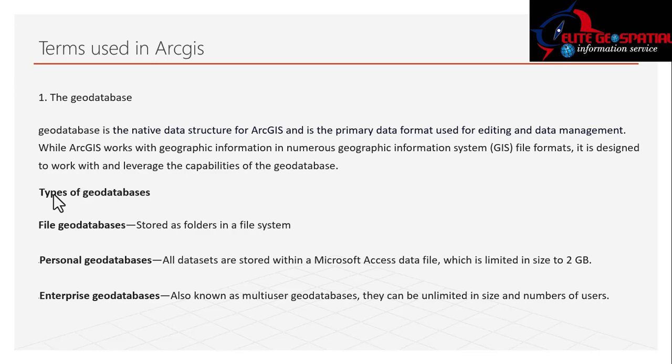To give an example of what a geodatabase is: imagine you want to cook rice — the pot is the geodatabase. You put your rice, Maggi, onion, salt, and everything else into it. Similarly, Ahmadu Bello University is like a geodatabase — from the outside you just know it as ABU, but inside it contains many things. Types of geodatabase follow from this concept.